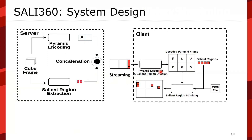The streamed content is then processed on the client side: the client converts the pyramid back to the cube map, positions the saliency regions based on their location, and stitches them into the cube map. Therefore, where users will probably fixate, the saliency patches will be applied, and the user can experience higher quality content.